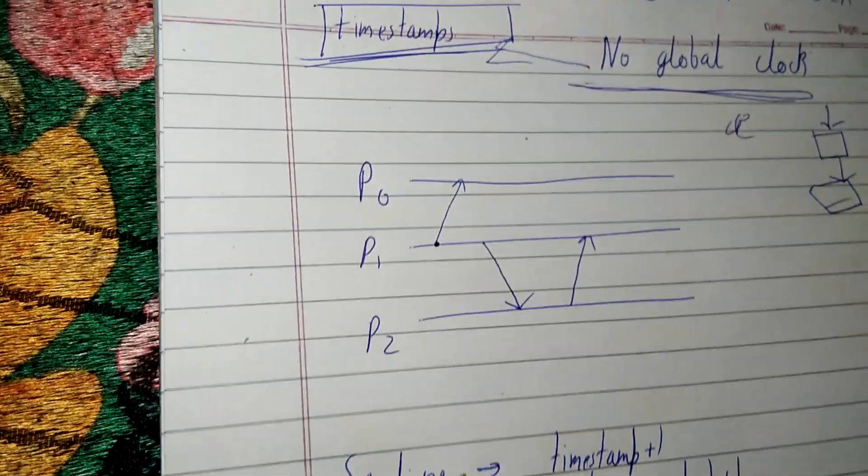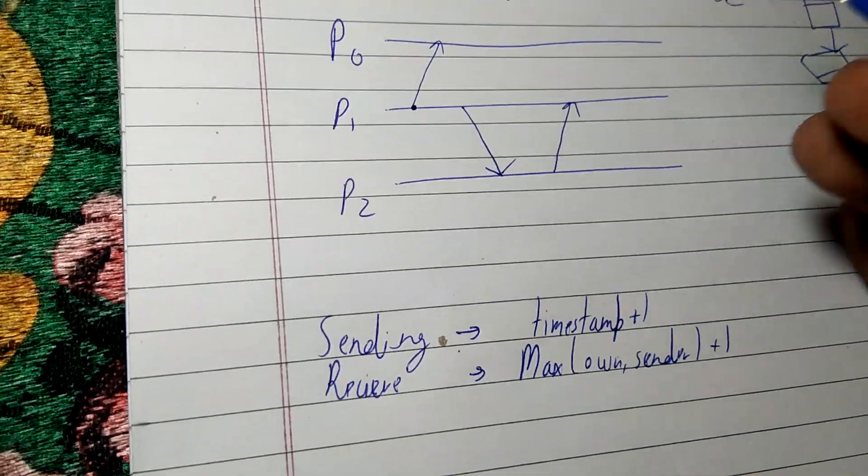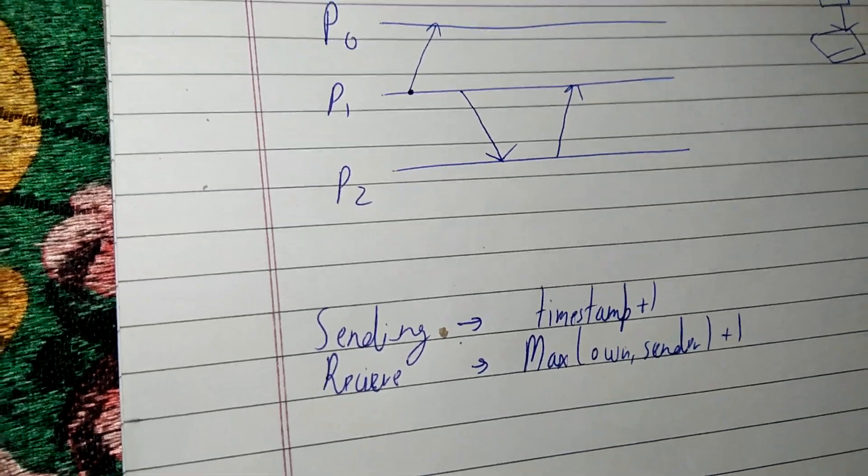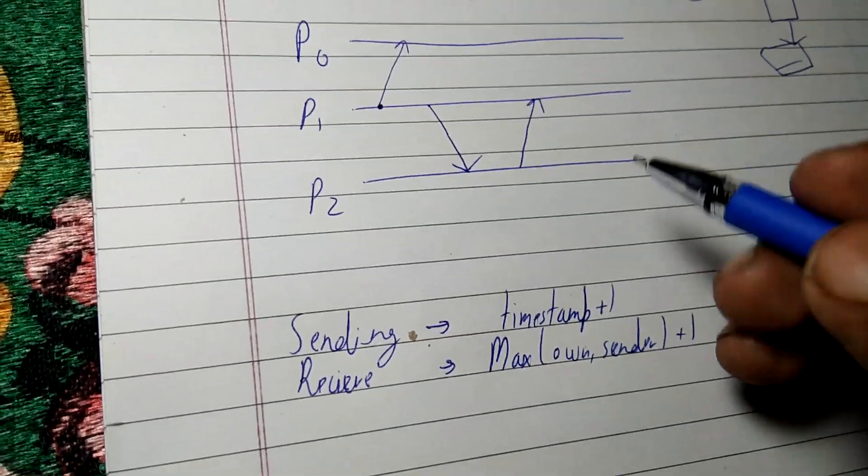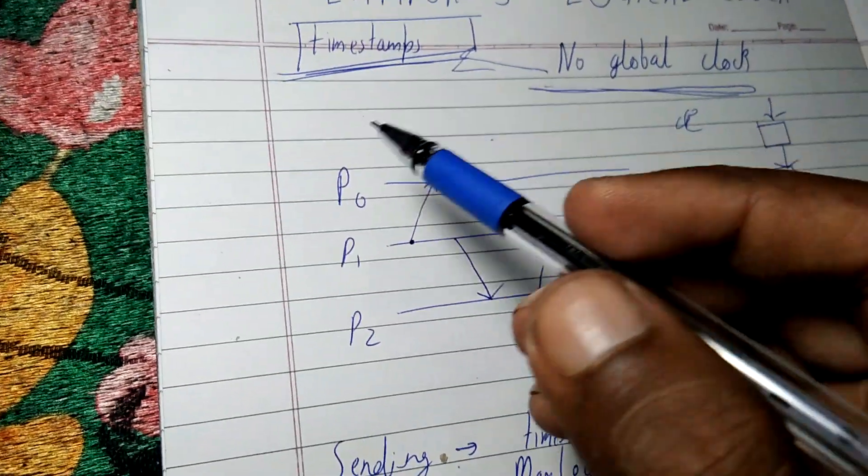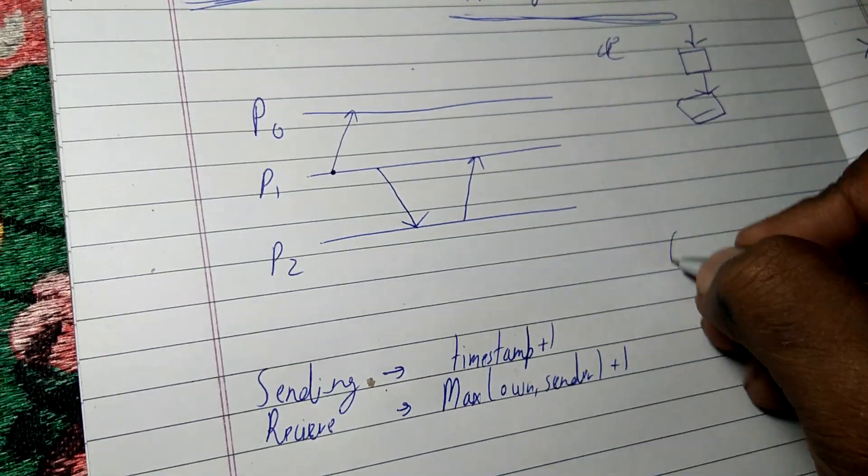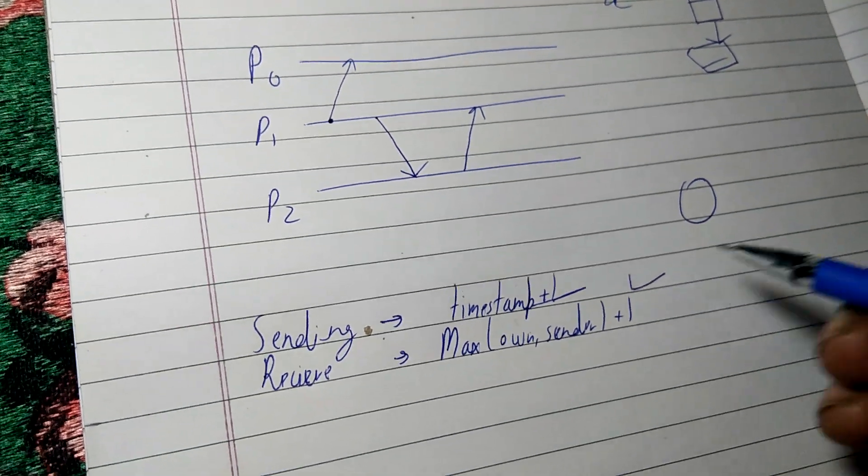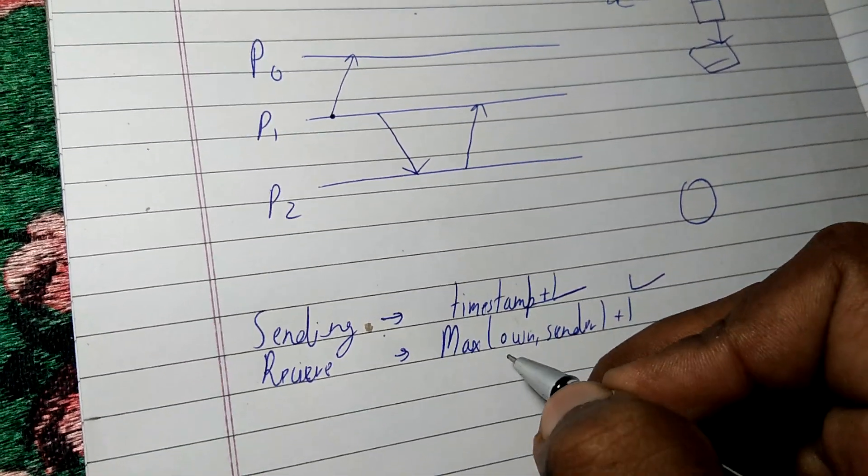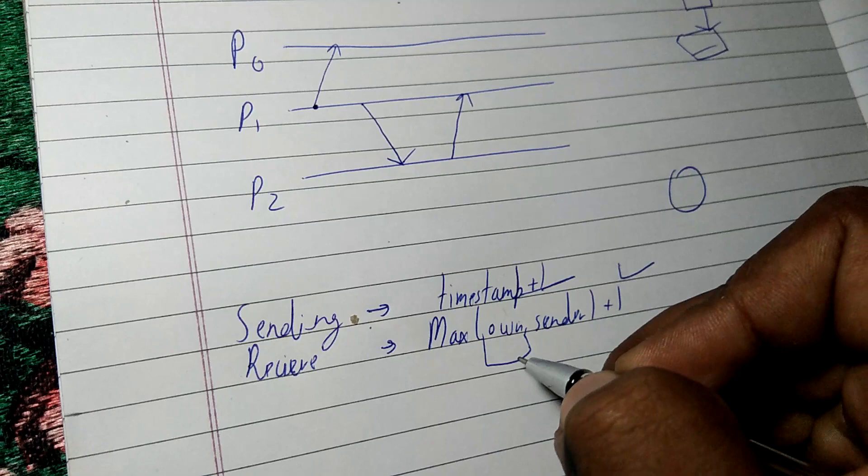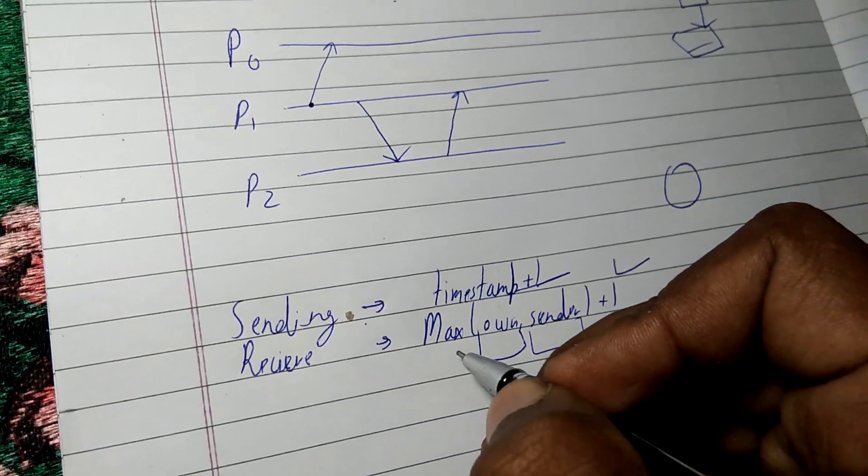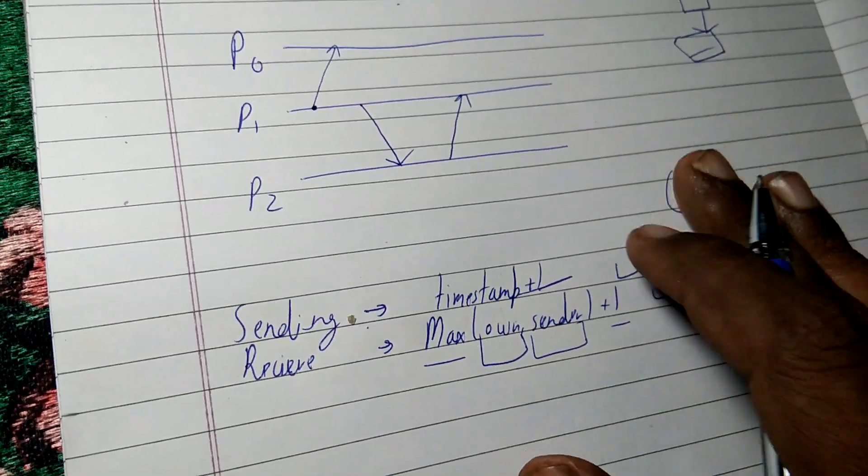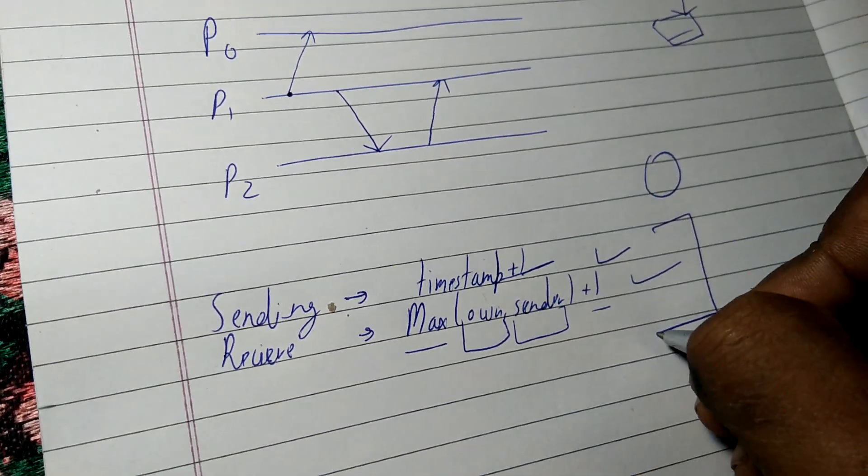Here are two main formulas. The algorithm states that every process has timestamp 0, and if it sends, then we can simply add timestamp plus 1. If it receives, then we can take its own timestamp and the sender's timestamp and take the max of it, then add 1 to that.